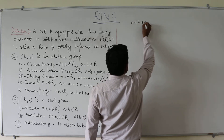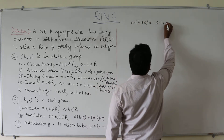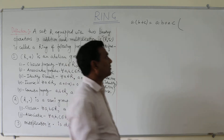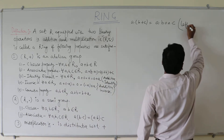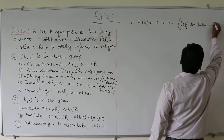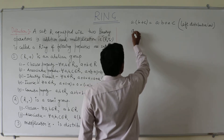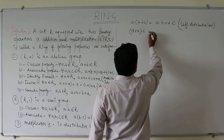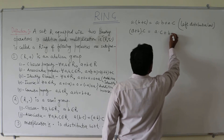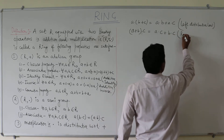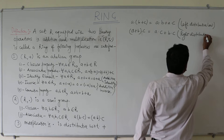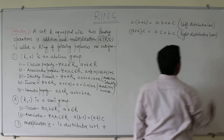The third property is that multiplication (·) is distributive with respect to addition. The left distributive law states: A · (B + C) = A · B + A · C. The right distributive law states: (A + B) · C = A · C + B · C.